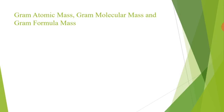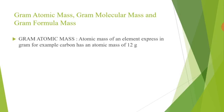First we discuss gram atomic mass. Atomic mass of an element expressed in grams instead of amu, then it is called gram atomic mass. For example, atomic mass of carbon is 12 amu, so gram atomic mass of carbon is 12 grams.